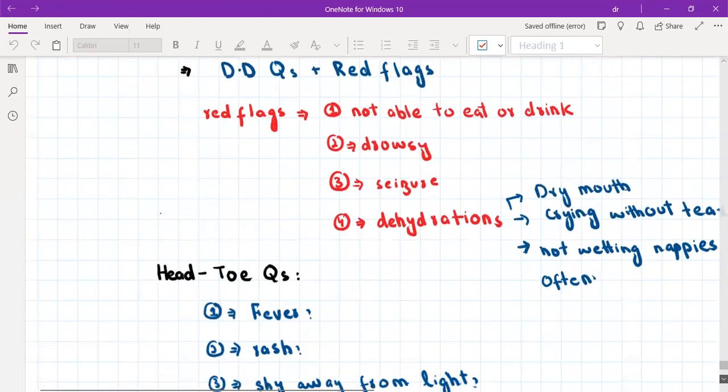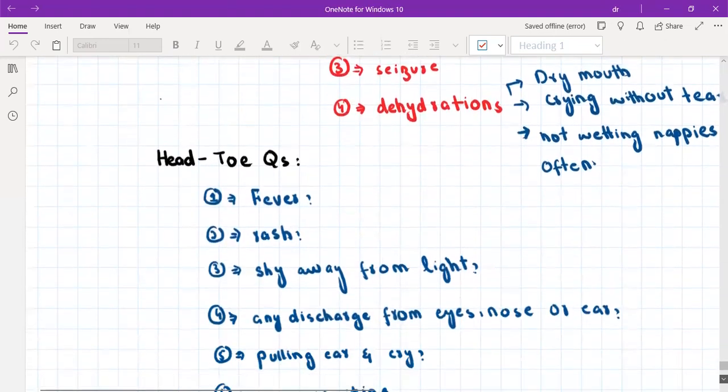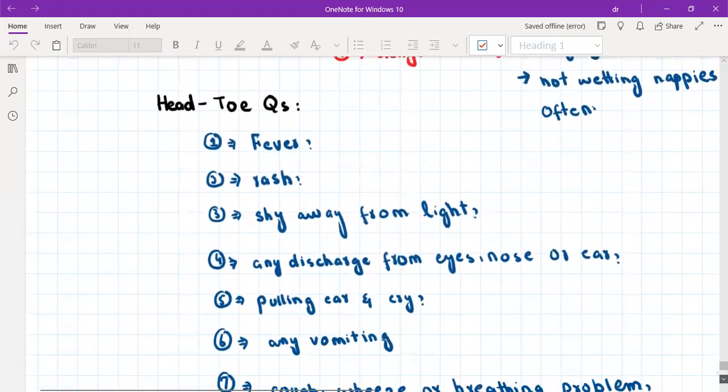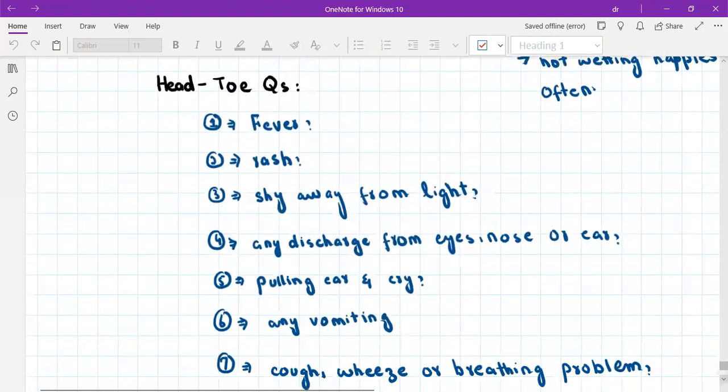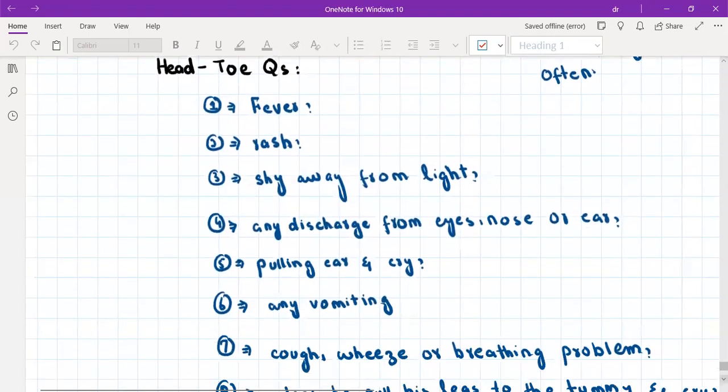Then we ask head to toe questions, which is another unique thing to the pediatric history. We don't ask these questions in adult patients. So again, in every pediatric sick child, we will ask these questions. These are head to toe questions. So starting from the head, we have fever. Rash is a generalized symptom. Fever and rash are basically generalized symptoms that involve the whole body. So we'll ask about any fever. Has he had any rash?